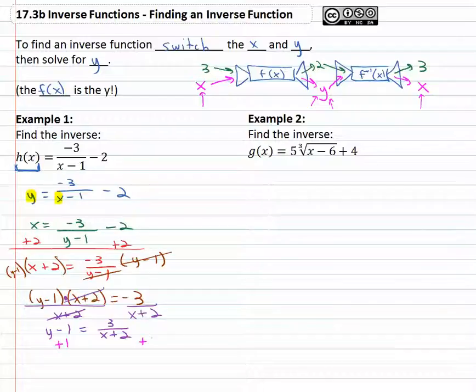Finally, to get the y alone, we'll add one to both sides, and y is equal to negative three over x plus two plus one.